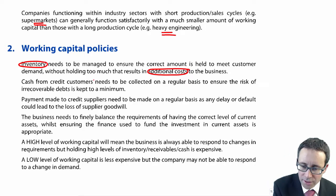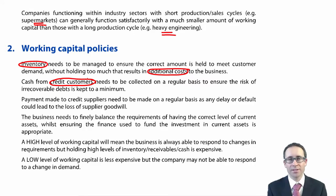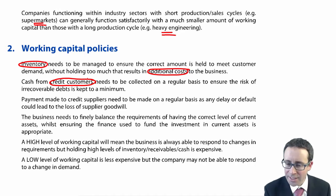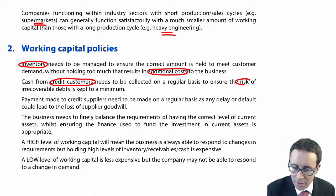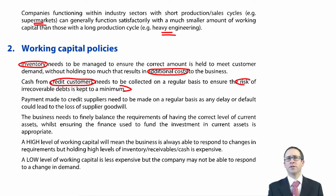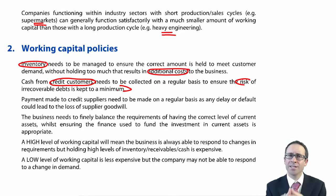If you look at cash from your credit customers — thinking about your receivables — you need to make sure you have a good credit control policy in place, because that will ensure you collect cash in quicker. The quicker you collect cash, you want to ensure the risk of irrecoverable debts is kept to a minimum, because generating more and more credit sales without collecting the money increases the risk of irrecoverable debts and reduces the level of profitability.